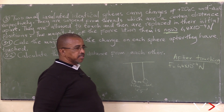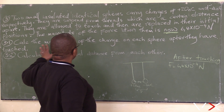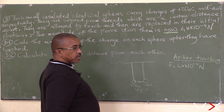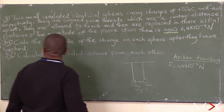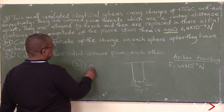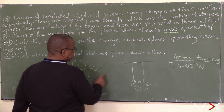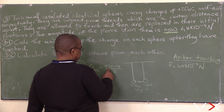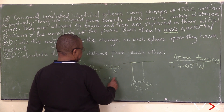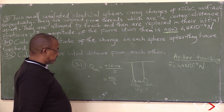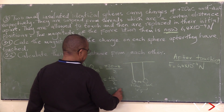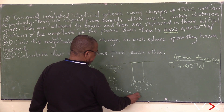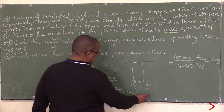Calculate the magnitude of the charge on each sphere after they have touched. The charge on each sphere is equal to plus 20 minus 4, divided by 2. That is 16 divided by 2, which equals plus 8 nanocoulombs.